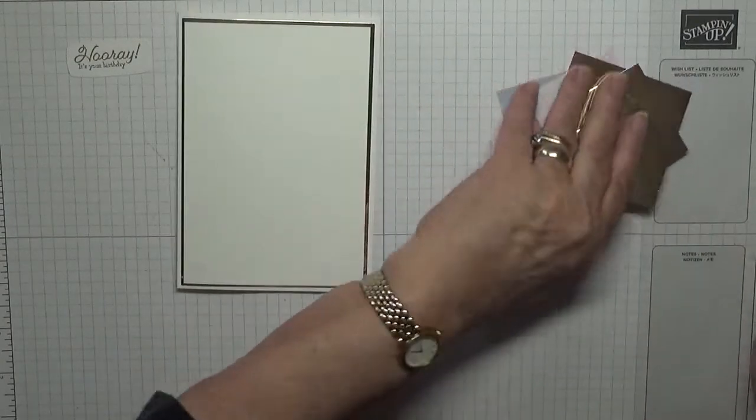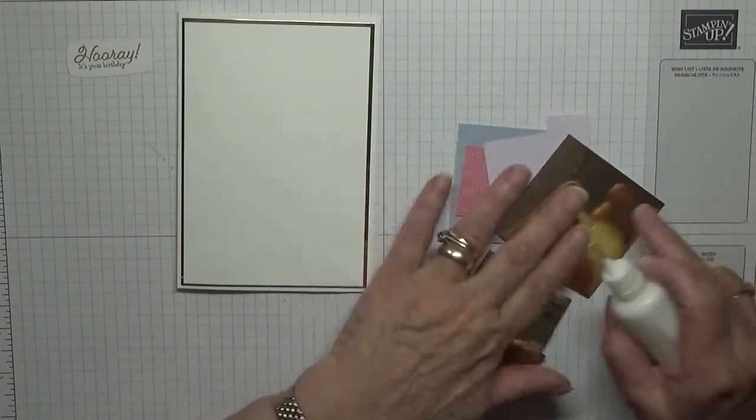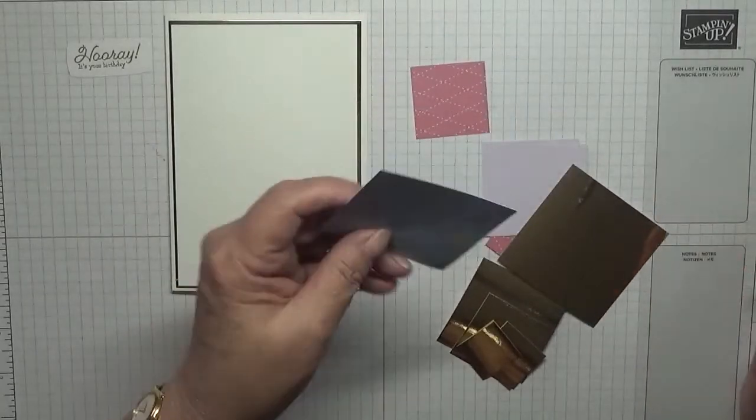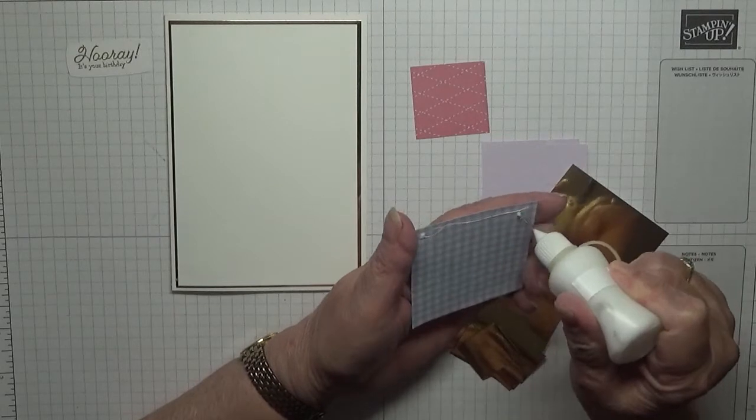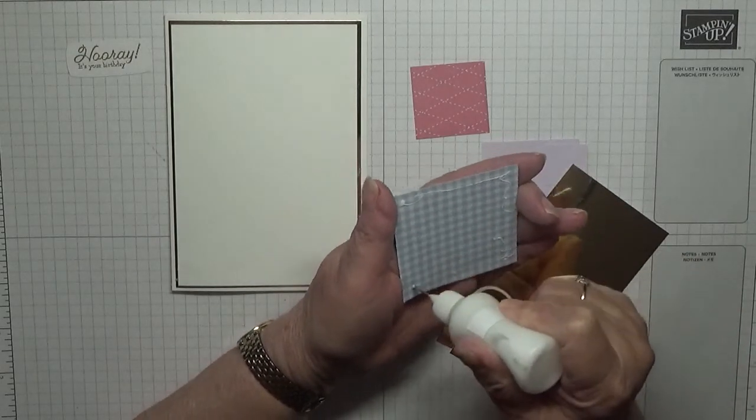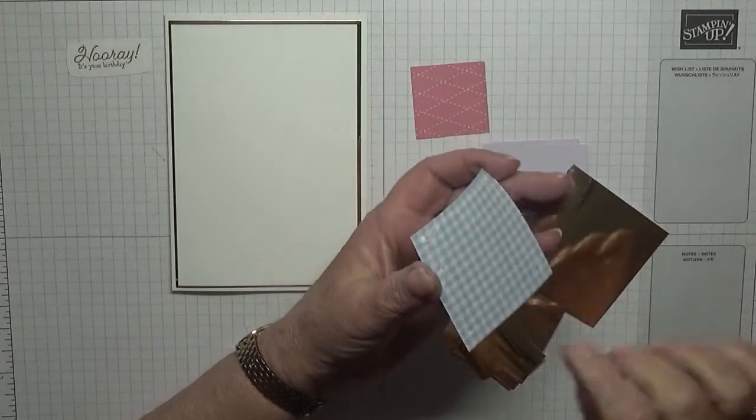Right, now then all we've got to do is glue all these papers onto our foil card. This is a great way to use up retiring papers.